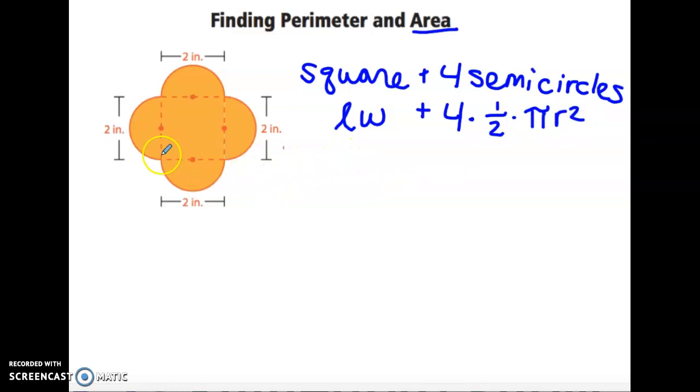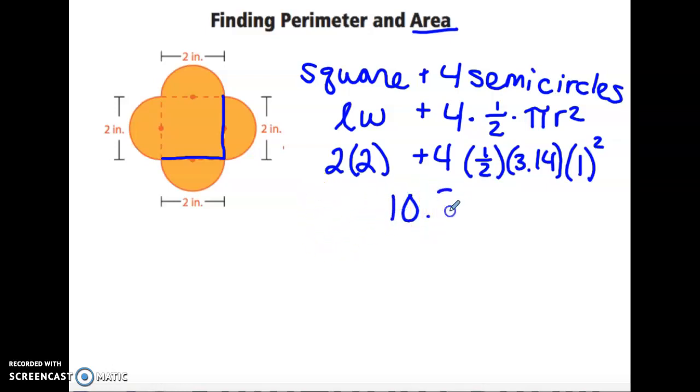The length of the square is 2, the width of the square is 2. So 2 times 2 plus 4 times one-half times 3.14. And we want radius. We said that 2 was the diameter, so half of 2 is 1. One is the radius squared. Go ahead and put that into your calculator. And we get the area is 10.28 inches squared.